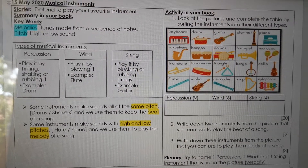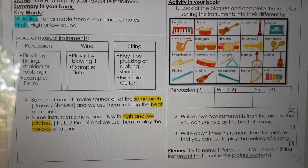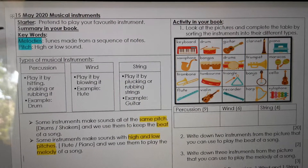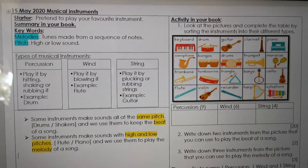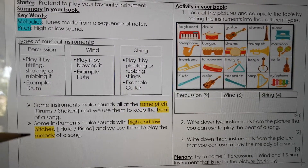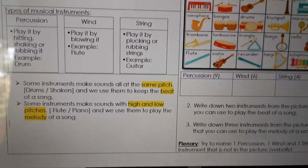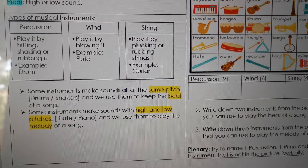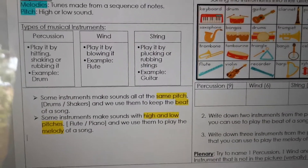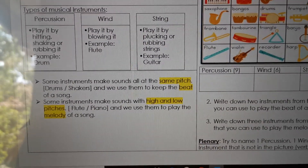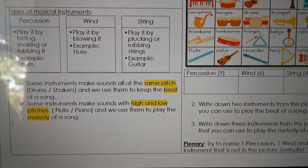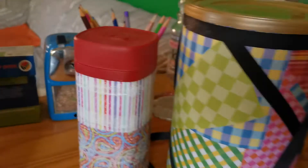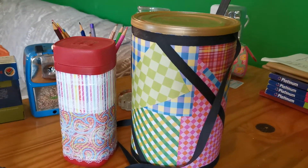An example of a string instrument is the guitar. Now you also have to write this in your book — you copy the keywords and the table with the three different types of musical instruments. This is very interesting: some instruments make sounds all at the same pitch, for example drums and shakers — they keep the beat of a song. Here I have two homemade instruments: a drum and a shaker.